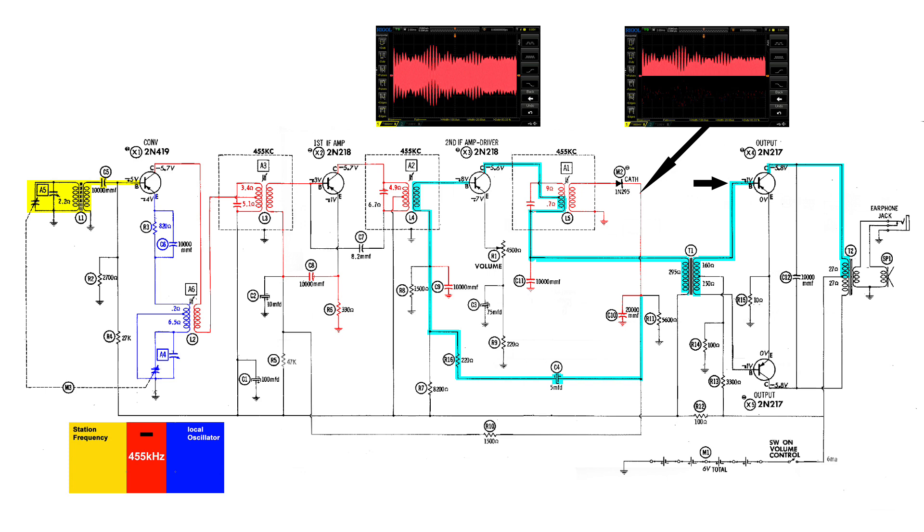On the next cycle of audio, the bottom is negative and that's when the bottom transistor will conduct, amplifying the audio and sending that half over to the output transformer.